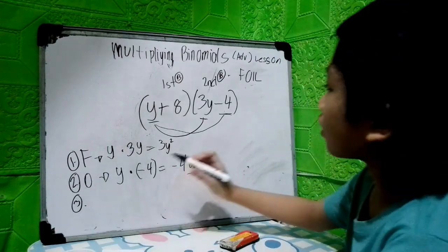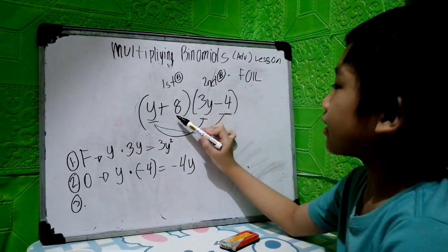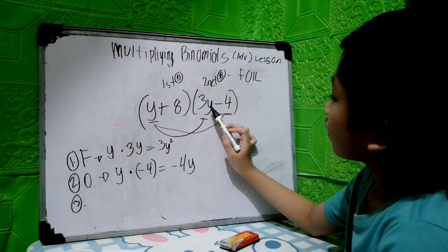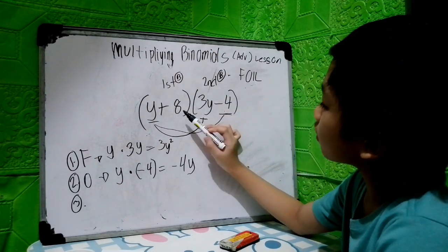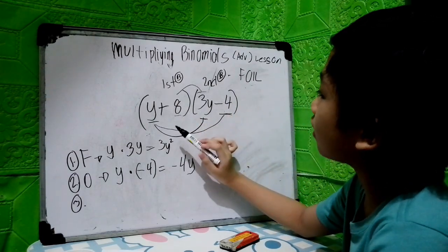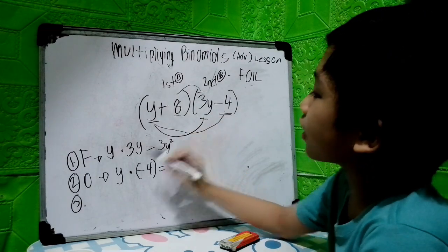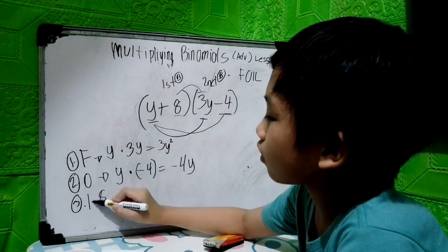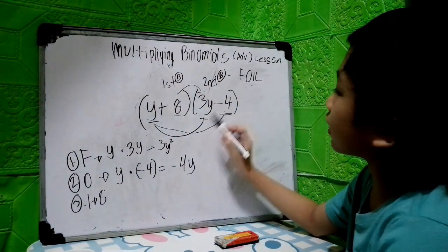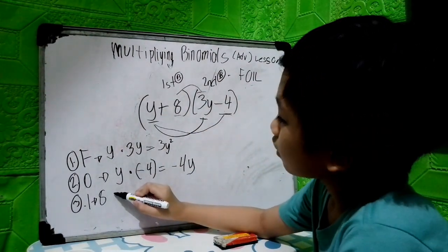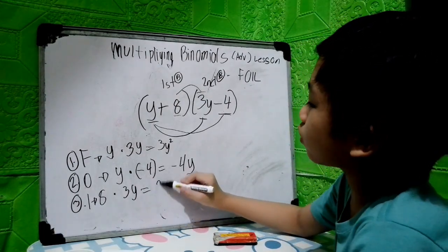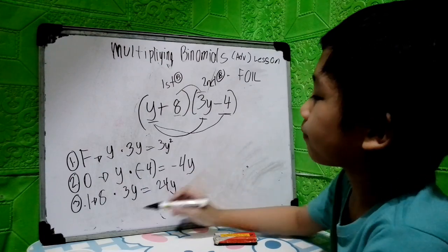The third step: get the inner term and multiply it by the first term in the second binomial. Our inner term in the first binomial is 8. This is I. 8 times 3y equals 24y.